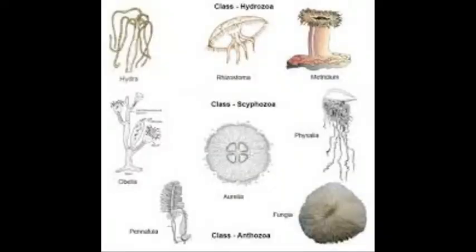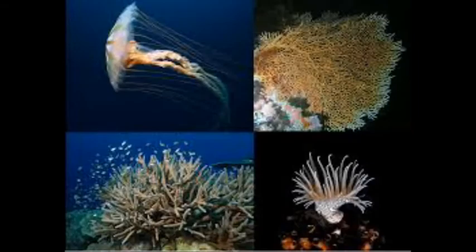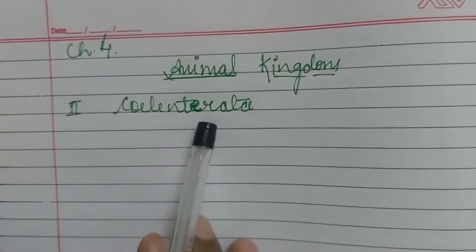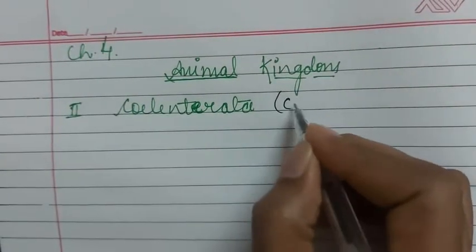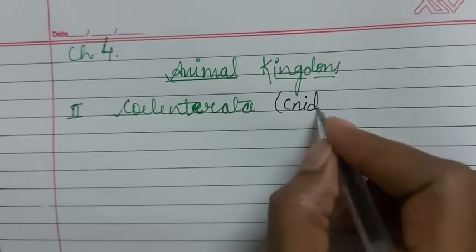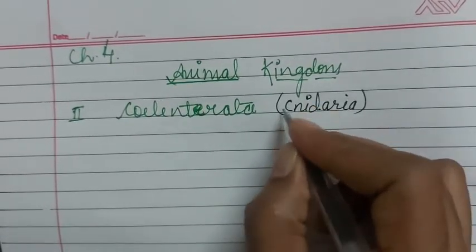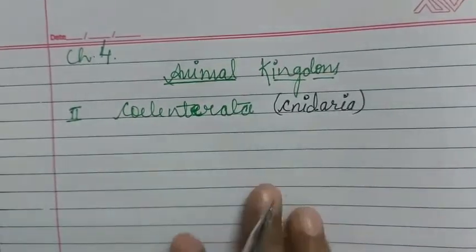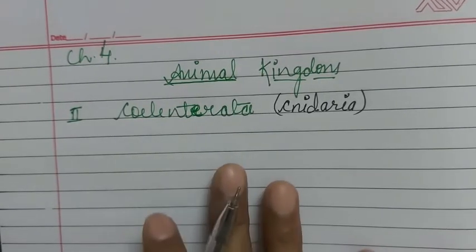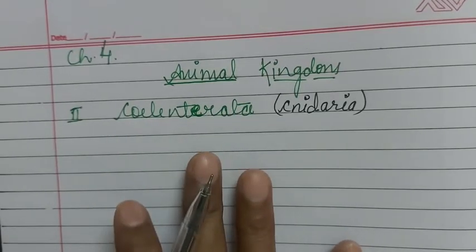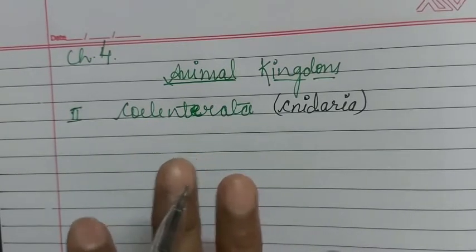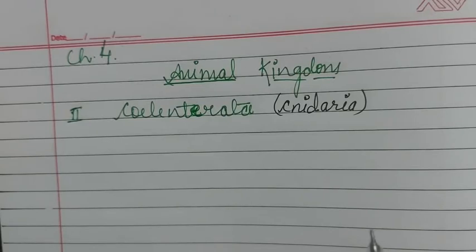Today we are taking the second phylum, Coelenterata. Now we are in the second phylum, Coelenterata. It is also known as Cnidaria because of the cnidoblast cells present in them. They are aquatic, marine, and free-swimming organisms.